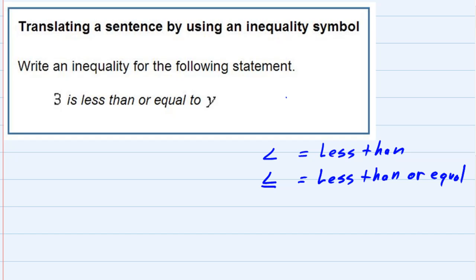And then the one going the other direction is our greater than, and then just like the less than, if it has a line underneath it, then that would be greater than or equal.